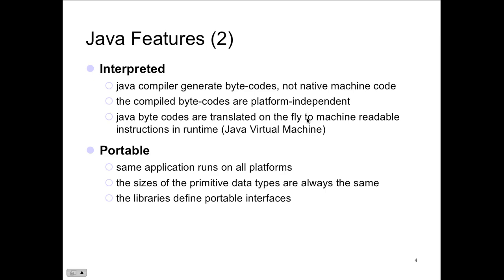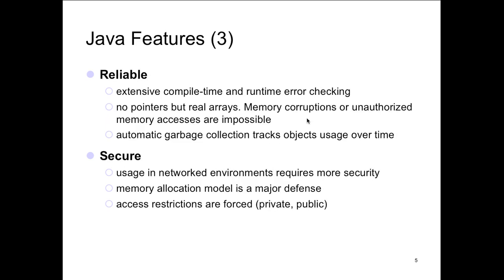You're familiar with the JVM from a consumer's point of view — usually the runtime engine that needs updating. What we're downloading is the same thing except with development tools included. When you download the development tools, you'll get the updated JVM. You develop an applet the same way as an application the same way as a Java Bean — it's all done the same way. The same application runs on all different platforms. The size of primitive data types are always the same because it's running on its own operating system. Libraries define the portable interfaces.